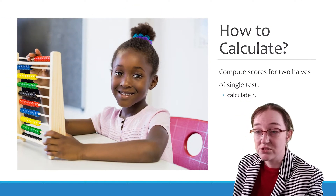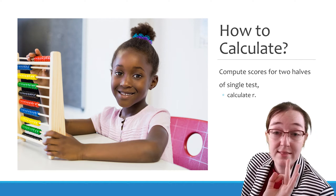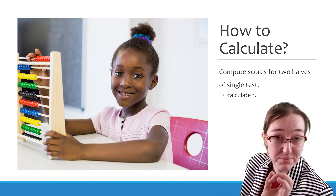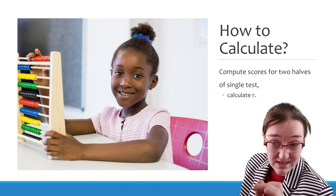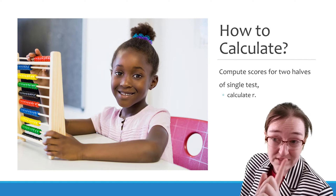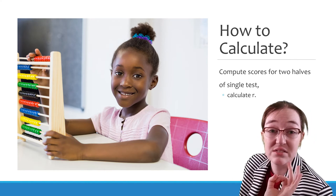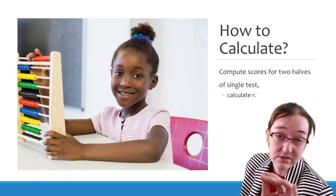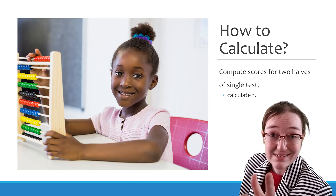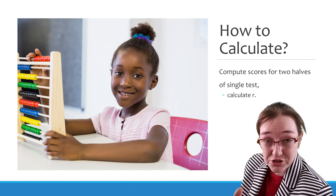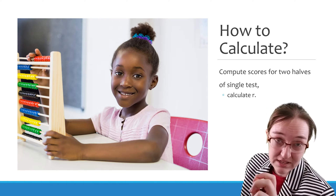So here are the three big steps. First is you divide the test into your equivalent halves. Then you calculate the Pearson correlation between the scores of the two halves. The last step is you have to adjust the half-test reliability using the Spearman-Brown formula. We will talk about this in a little bit. But that's the basic idea — it is fairly straightforward. You cut your test in half, correlate those two halves, and you have a split-half reliability.